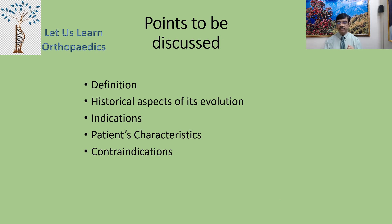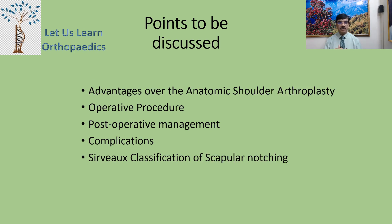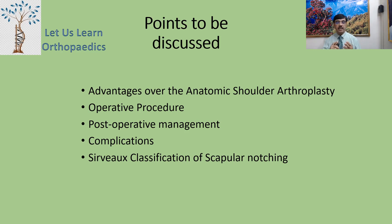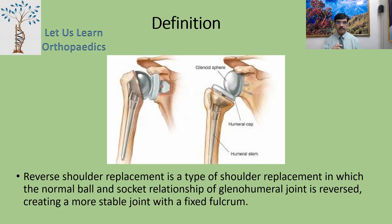The 10 discussion points are: one, definition; two, historical aspect of its evolution; three, indications; four, patient characteristics required; five, contraindications for the surgery; six, advantages over the anatomic shoulder arthroplasty; seven, operative procedure; eight, postoperative management; nine, complications; and ten, the Sirveaux classification of shoulder notching.